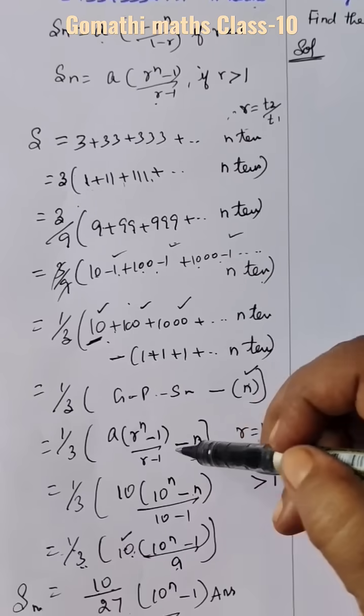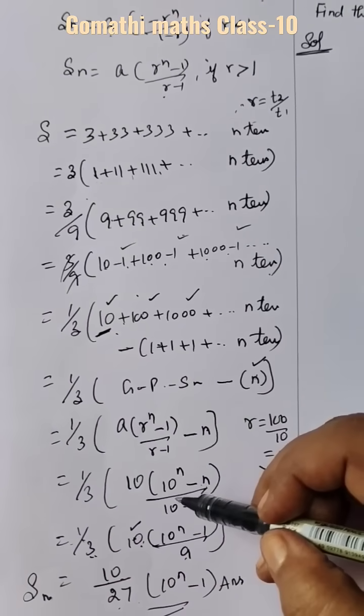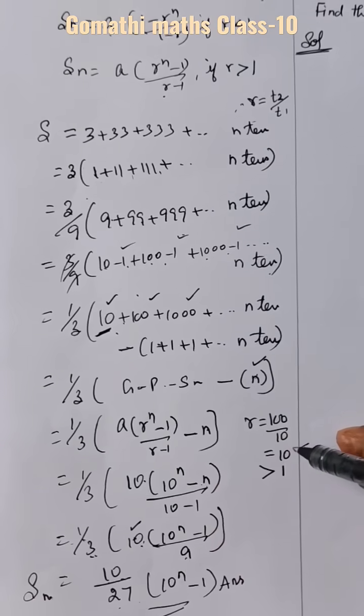A times R power n minus R minus 1. Because R greater than 1, A value is 10, R value is also 10. See here.